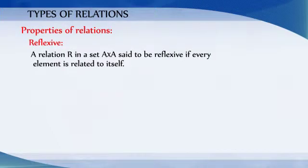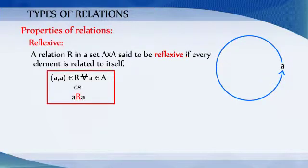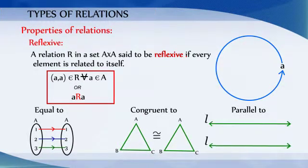Properties of relations. Reflexive: A relation R in a set A cross A is said to be reflexive if every element is related to itself. That is, the ordered pair (a, a) belongs to R for every a belonging to set A, or we can say a relates to a. For example, the relations equal to, congruent to, and parallel to are reflexive relations.